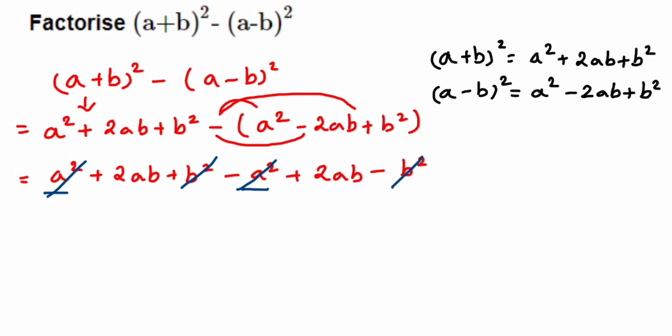We're left with 2ab plus 2ab, so 2ab + 2ab is 4ab. The answer will be equal to 4ab, that's it.